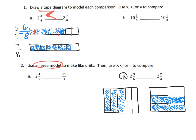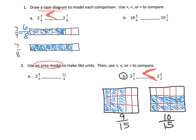The beauty of the area model is it's really easy to get a common denominator. I take the fifths and cut them into thirds, then take the thirds and cut them into fifths: one, two, three, four, five. Instead of three-fifths I now have nine fifteenths — nine little blue units shaded out of 15 total. And over here I can count one, two, three, four, five and see we now have ten fifteenths. So two-thirds is larger than three-fifths, which means two and two-thirds is larger than two and three-fifths.